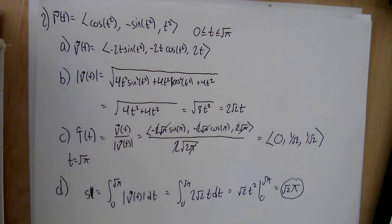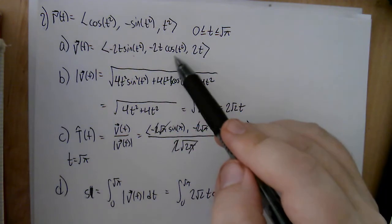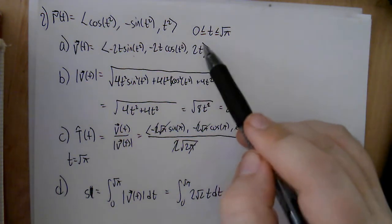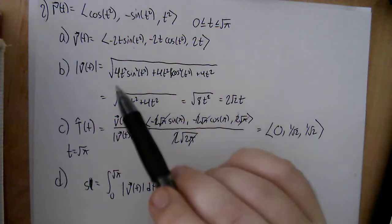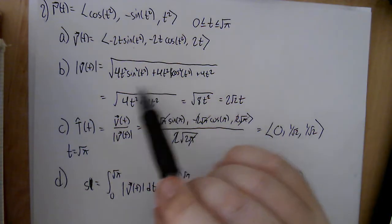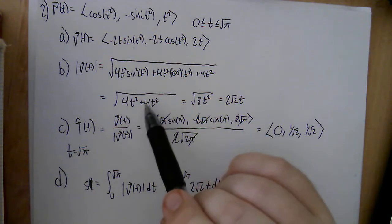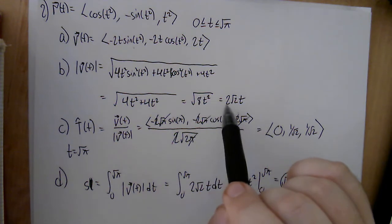The final free response problem gives position function r(t) equal to cosine of t squared, negative sine of t squared, and t squared, for t between 0 and root pi. First, find the velocity by differentiating each component using the chain rule: negative 2t sine of t squared, negative 2t cosine of t squared, and 2t. The speed is the magnitude of velocity. Squaring the components and adding, we notice a Pythagorean identity, giving 4t squared plus 4t squared equals 8t squared. Since t is positive, the speed is 2 root 2 times t.